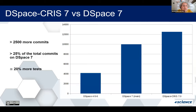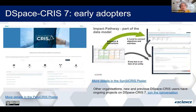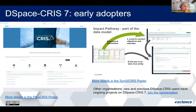DSpace-CRIS 7 has 2,500 more commits than DSpace 7, representing 25% of the total commits on DSpace 7, and it also features 20% more tests before the release. There are important early adopters of DSpace-CRIS 7 — for instance the PeRICRIS national project for a national research information platform, and the SynCyCRIS project studying the impact of research on agriculture, funded by the Ministry of Agriculture in Germany. For both of them you can find a poster at Open Repositories.